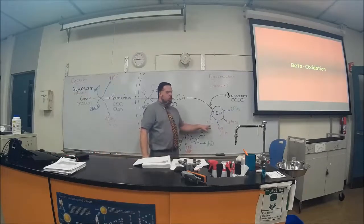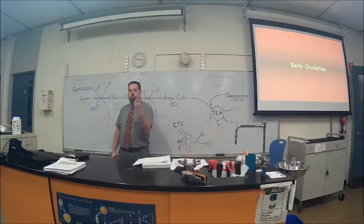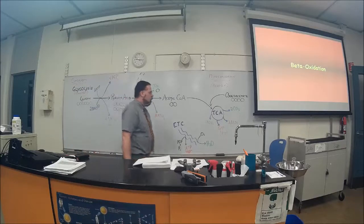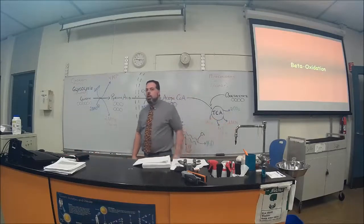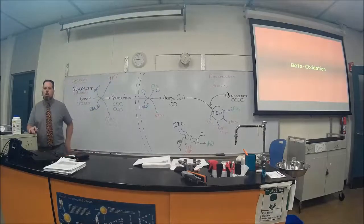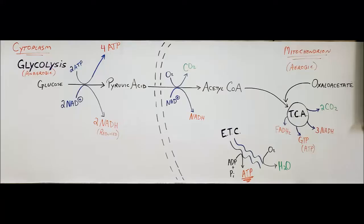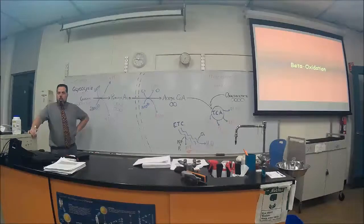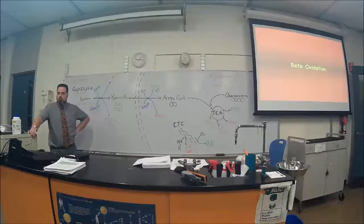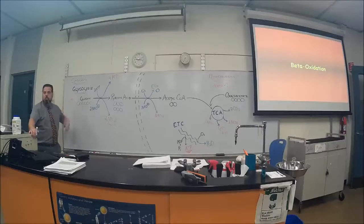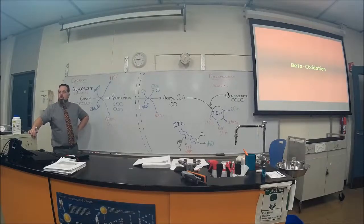For every FADH2 that enters over here, you get two ATPs. For every NADH that enters in here, you get three ATPs. That's a fast review with us. That's where we use glucose.